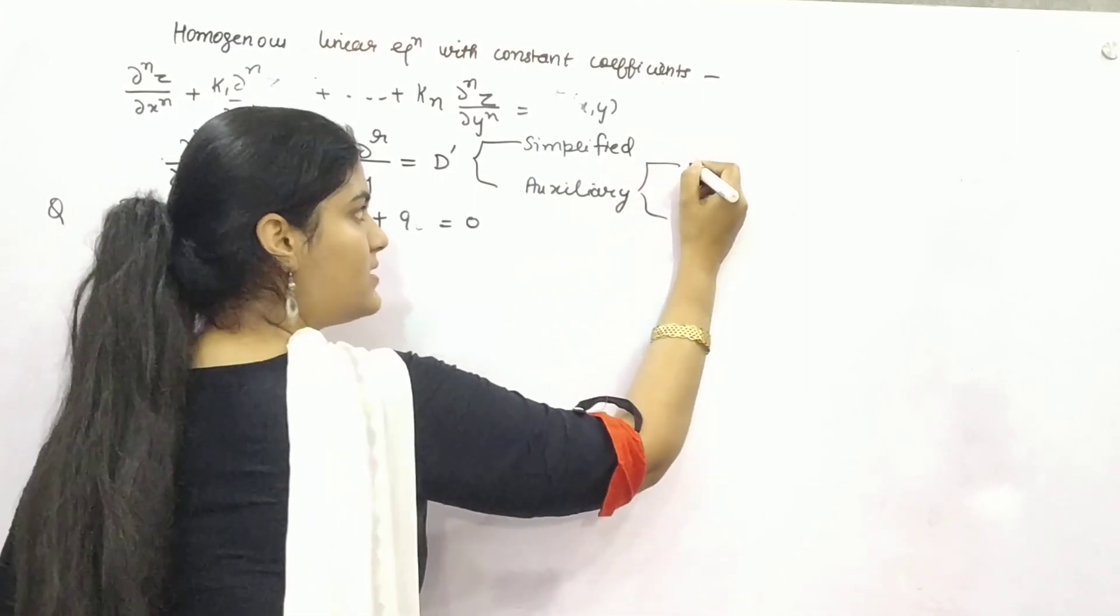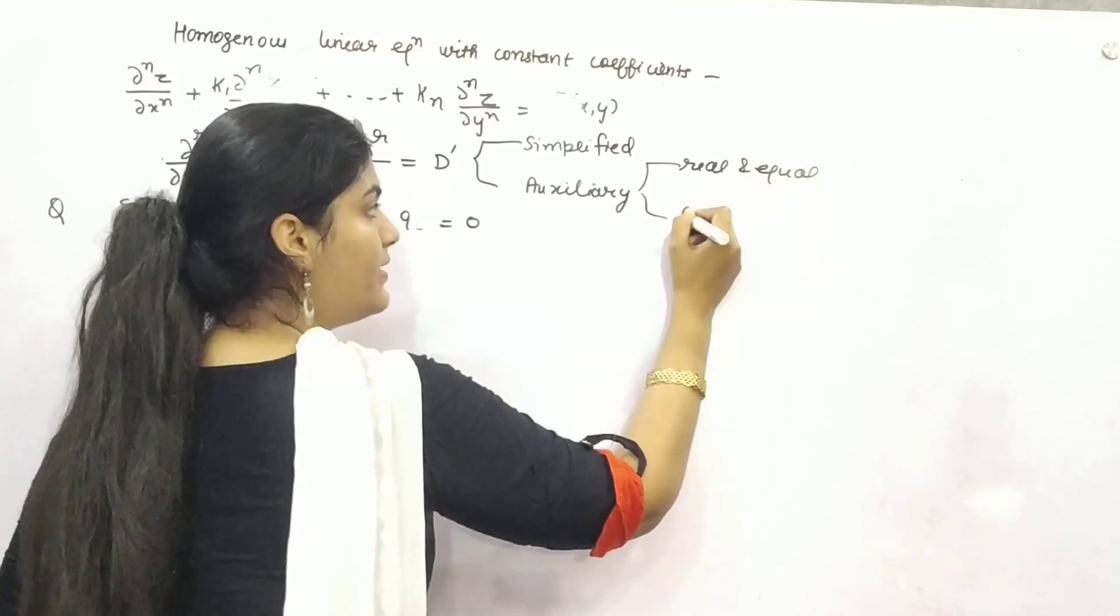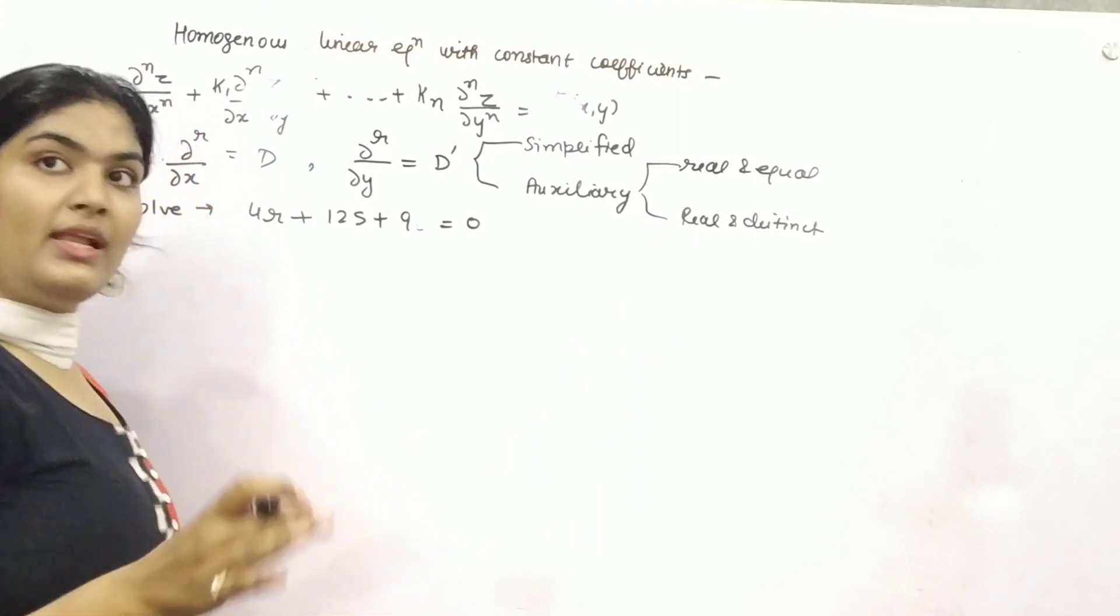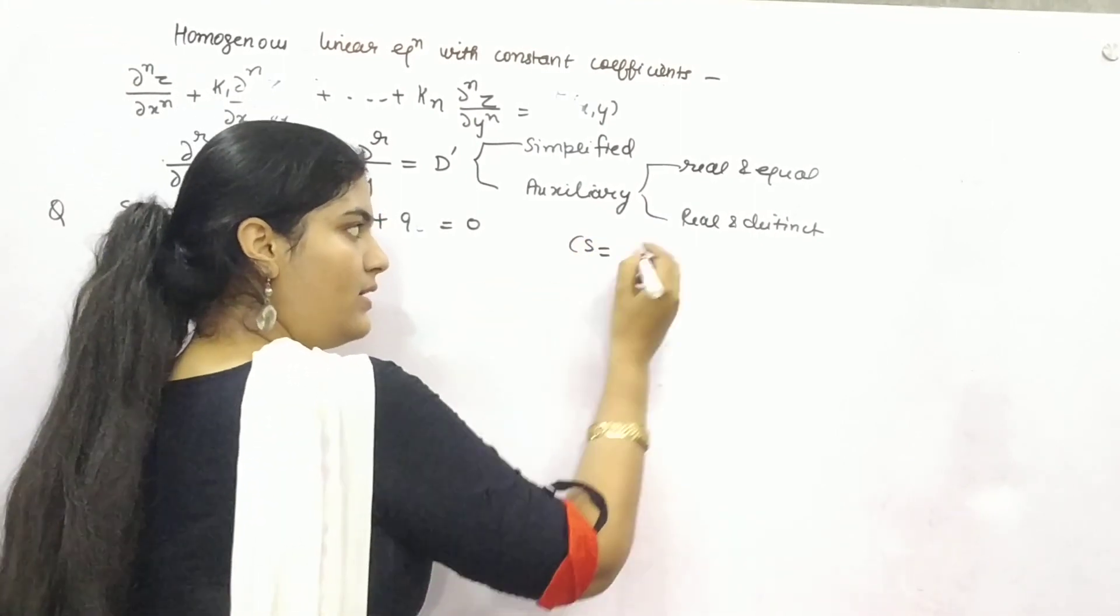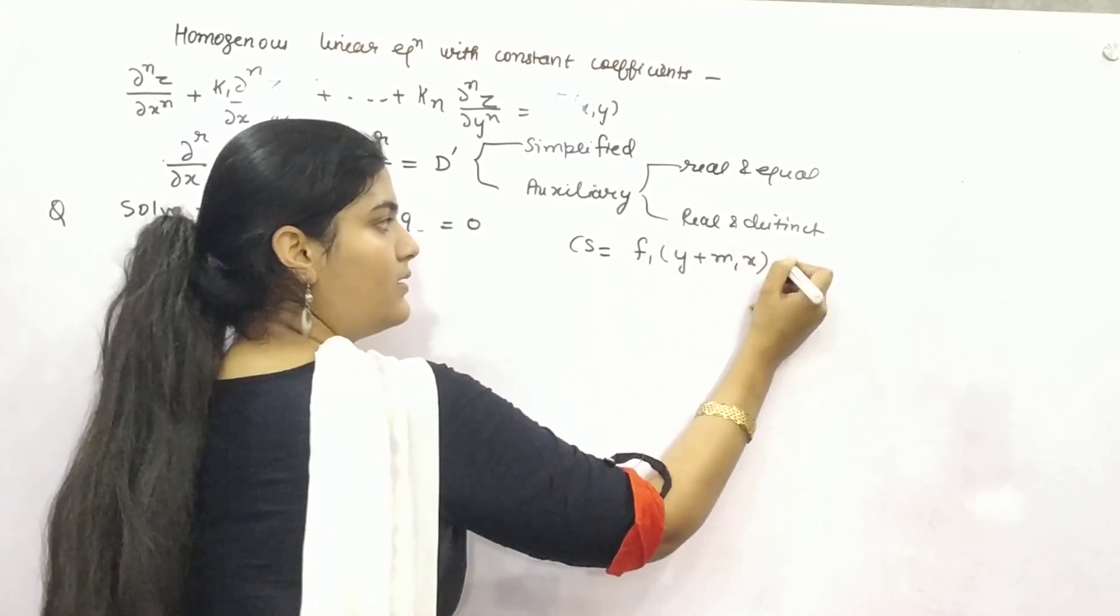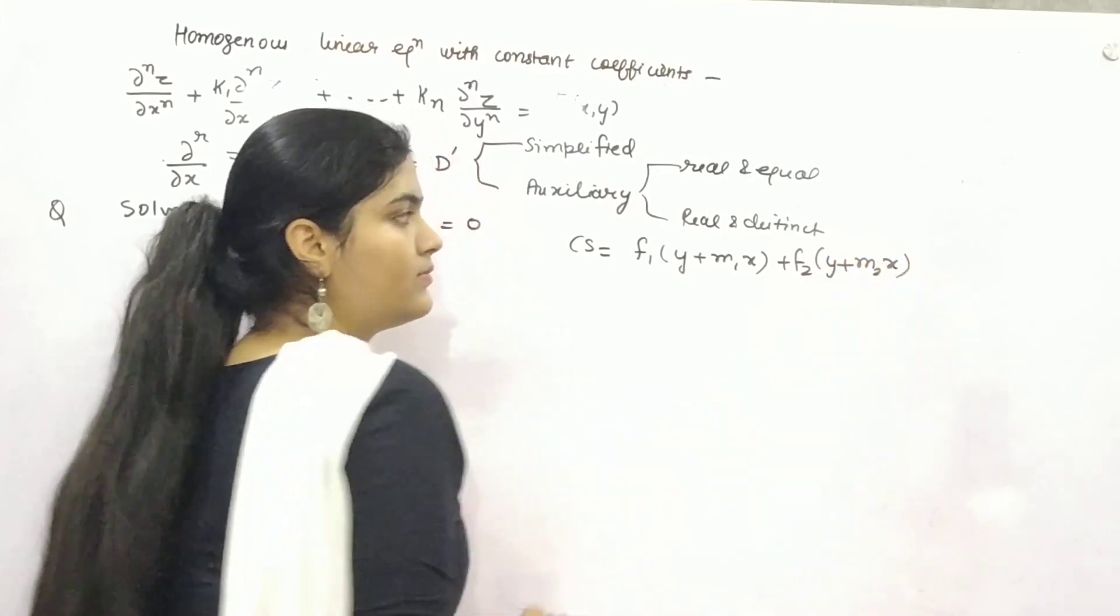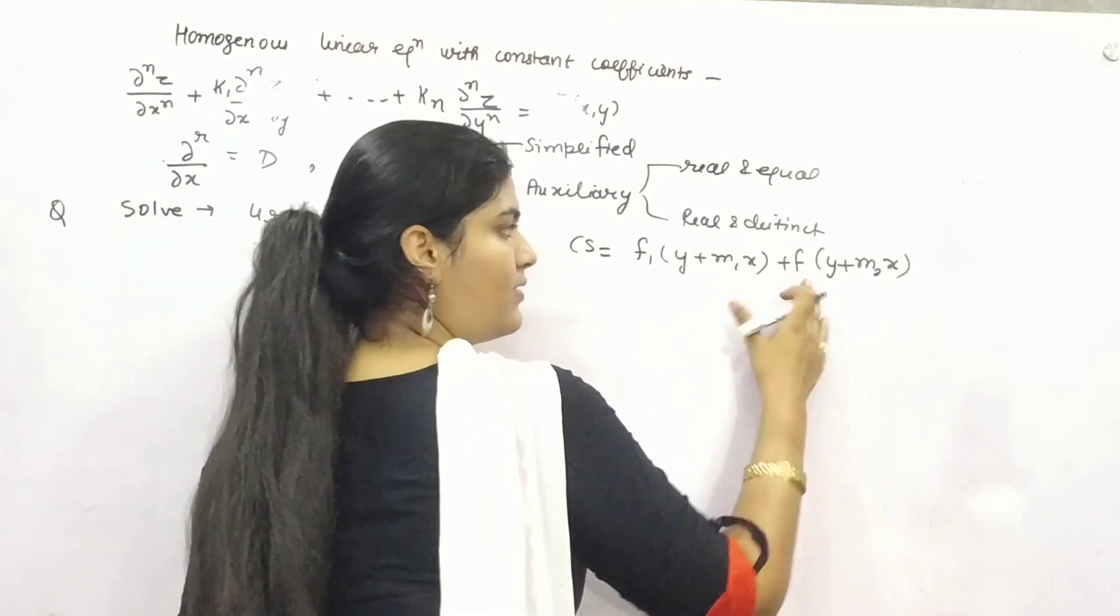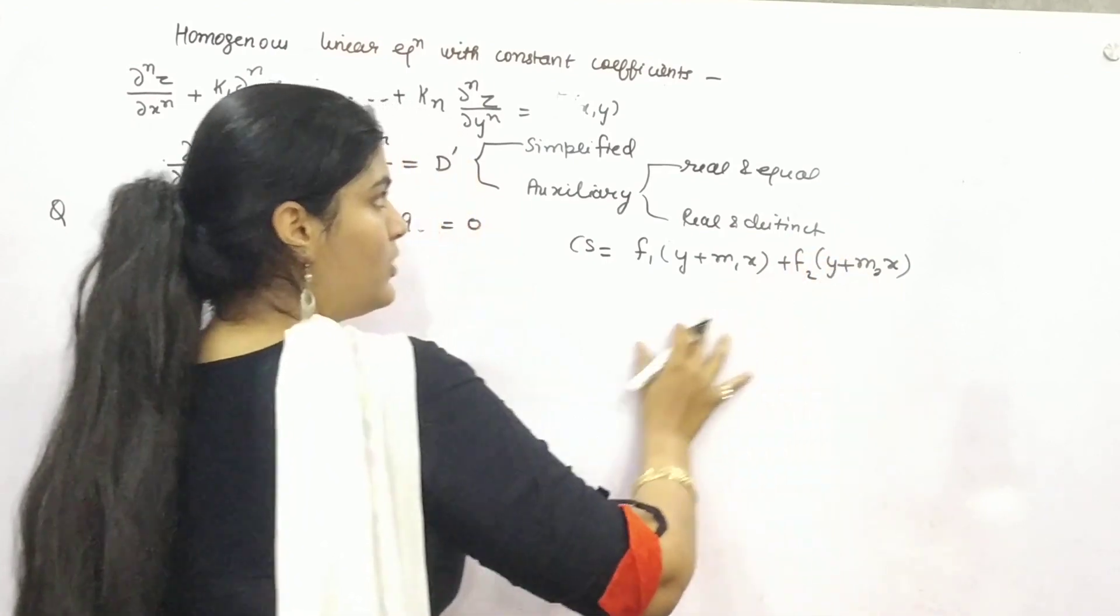There will be two chances whether you will get real and equal roots or real and distinct roots. If roots are real and distinct, then your complete solution will be f1(y + m1x) + f2(y + m2x). You can simply write it as f1 or f2, both are right.